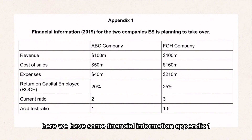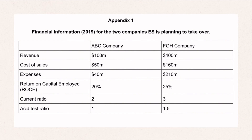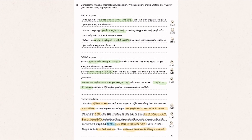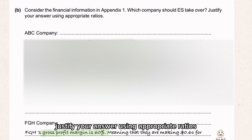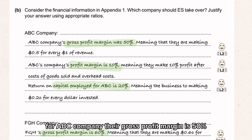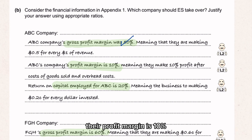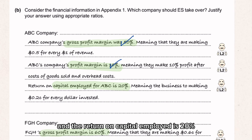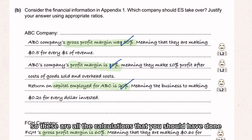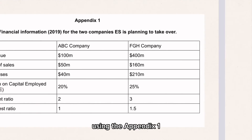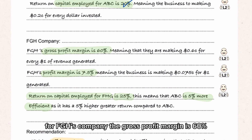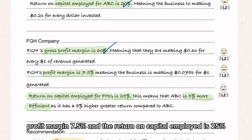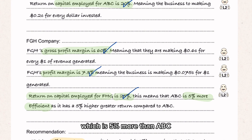Here we have some financial information in Appendix 1 for a Paper 2 question. Consider the financial information in Appendix 1 — which company should ES take over? Justify your answer using appropriate ratios. For ABC company, their gross profit margin is 50%, their profit margin is 10%, and their return on capital employed is 20%. For FGH's company, their gross profit margin is 60%, profit margin 7.5%, and their return on capital employed is 25%, which is 5% more than ABC.